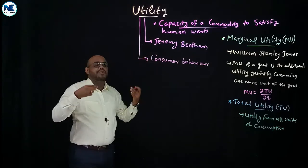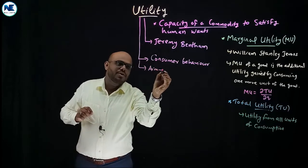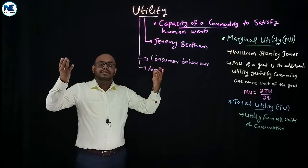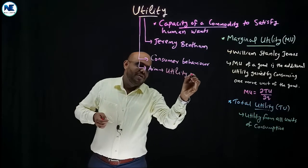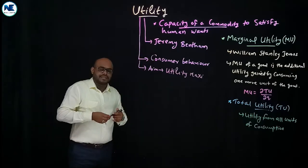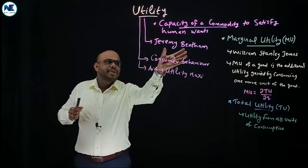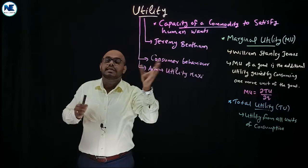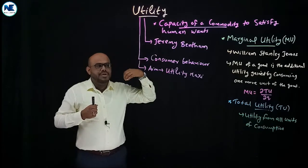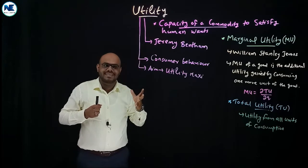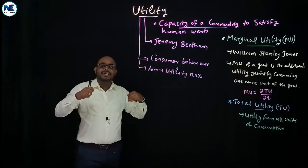What is the aim of a consumer? The goal or aim of a consumer is utility maximization — that is, maximization of satisfaction. This topic is closely associated with consumer behavior. From a producer's point of view, the goal is profit maximization, but here we are discussing consumer behavior where the aim is utility maximization or maximization of satisfaction.